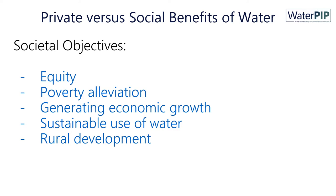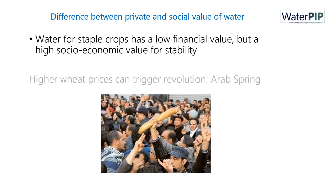Society has several societal objectives that need to be considered from a social point of view, such as equity, poverty alleviation, but also generating economic growth, sustainable use of water, and rural development. It is therefore important to make a distinction between the private and the social value of water. Water for staple crops has, for instance, a low private financial value, whereas it has a high socio-economic value because it is important for stability. Higher wheat prices in the past have triggered revolutions, such as during the Arab Spring — it can cause instability — so therefore it has a high socio-economic value, whereas if you would look only at the financial value, that's rather low.